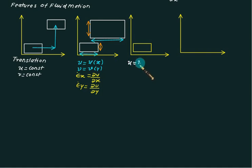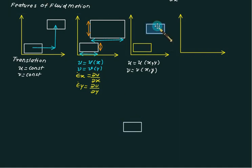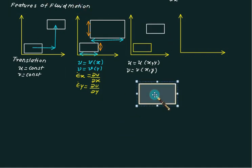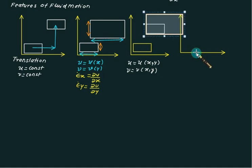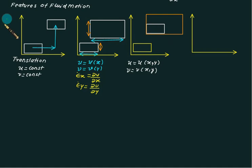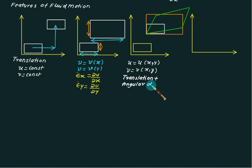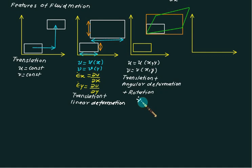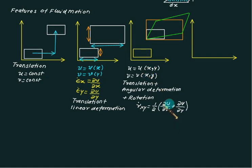In the more complex case, if u is a function of both x and y, and v is also a function of both x and y, the fluid will translate, deform linearly, and also deform angularly. The element deforms along both axes and additionally undergoes angular deformation, resulting in translation plus angular deformation plus rotation. The shear strain rate is given as one-half times (∂v/∂x + ∂u/∂y), which is only possible when u and v are functions of both x and y.